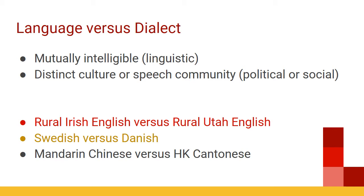Here's one last example: a Mandarin Chinese speaker and a Cantonese speaker from Hong Kong. These are not mutually intelligible, but for political or government reasons, they are sometimes considered dialects of the same Chinese language. They might use the same writing system, but a Mandarin speaker and a Cantonese speaker could not carry on a conversation without knowing each other's language. This is another case where the political definition of language or dialect is overriding the linguistic definition.